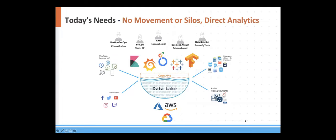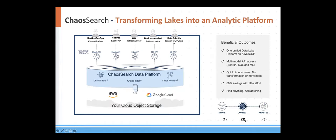What I see in the market time and again is that people want no movement out of the lake — no more standing up silos. They want direct access to their data, whether it's streaming IoT data, app log data, or BI data, across all clouds, so they can get access via Kibana, Grafana, Looker, Tableau, TensorFlow. All these different personas want access to their data immediately — not waiting weeks or months. With ChaosSearch, we transform your cloud storage into an analytical data platform, publishing elastic APIs for search, SQL APIs for BI, and ML APIs for predictive analysis.